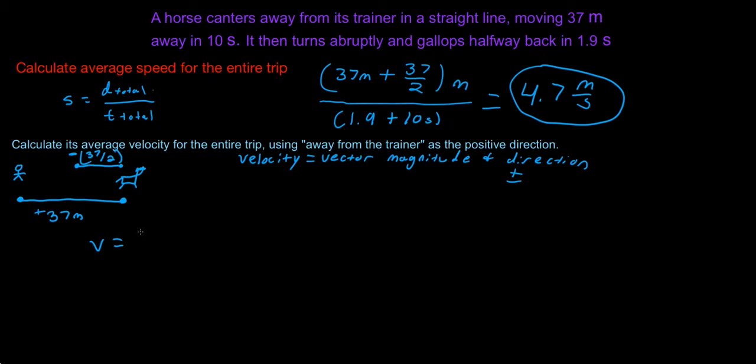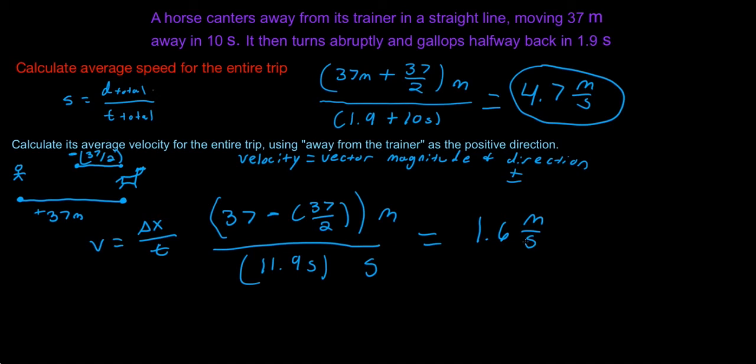Velocity equals change in x over time. Time is still the total amount. So we would have 37 minus 37 over 2, all over our time total, which is 1.9 plus 10, which is 11.9 seconds. So we do these two things, we divide them, meters over seconds, and our final answer will be 1.6 meters over seconds.